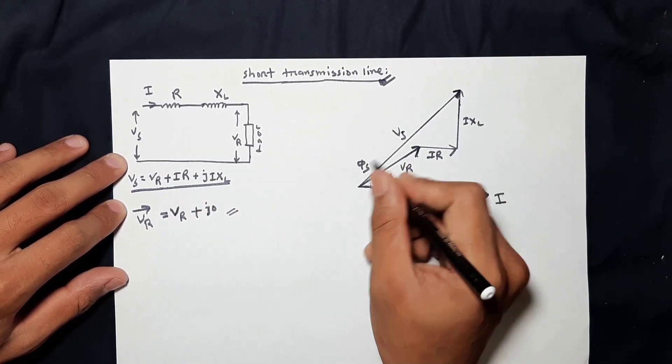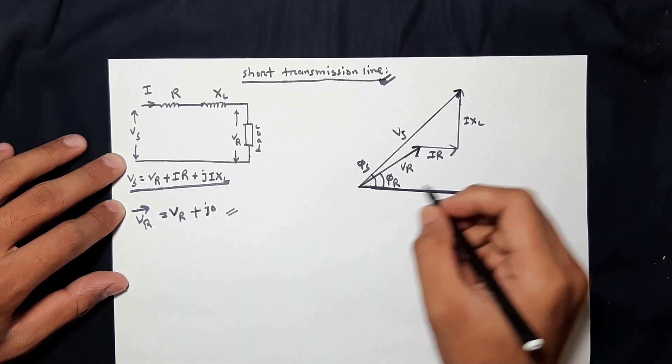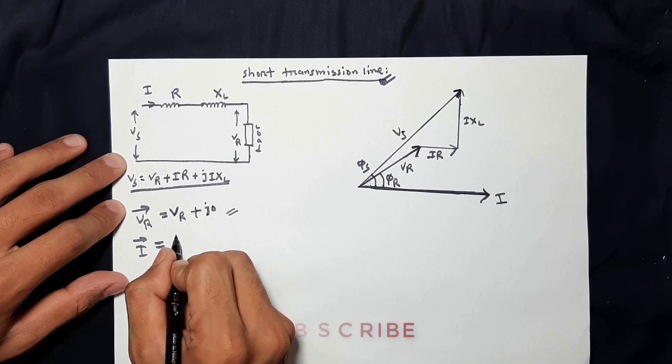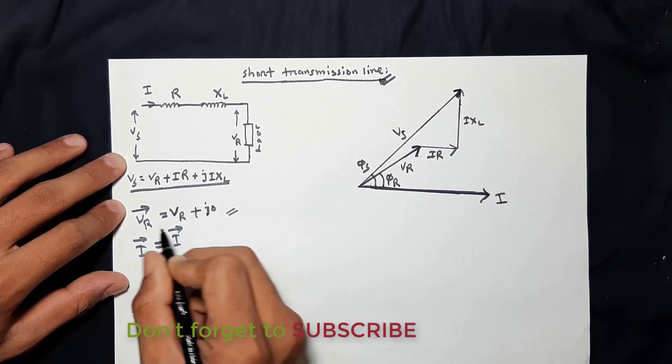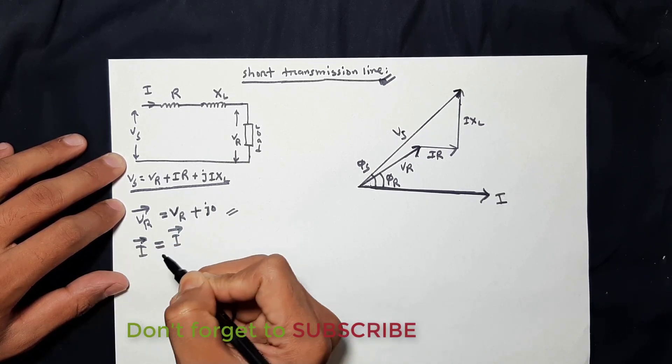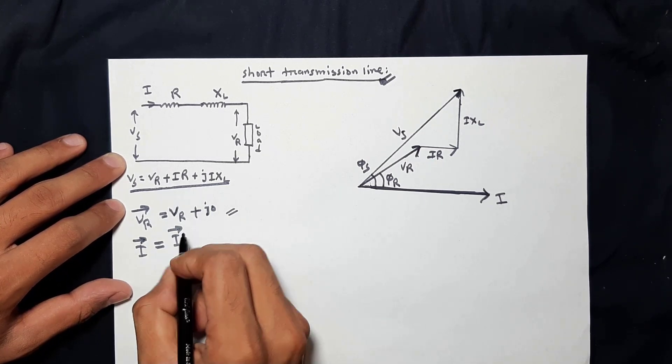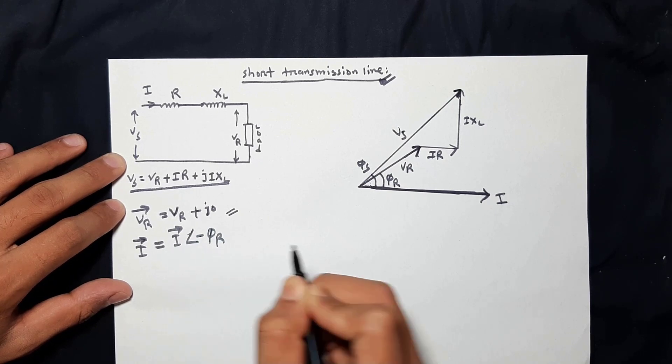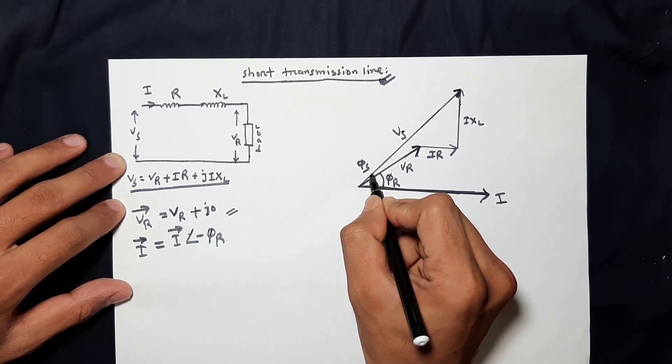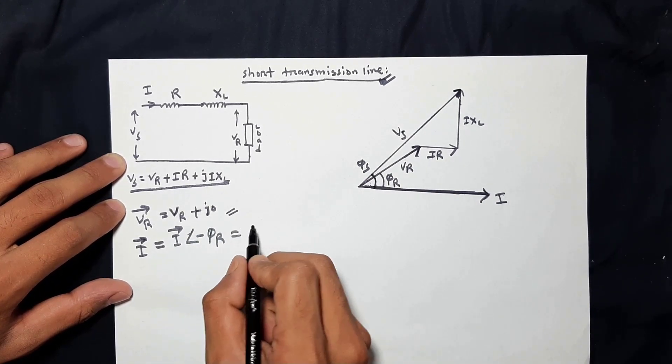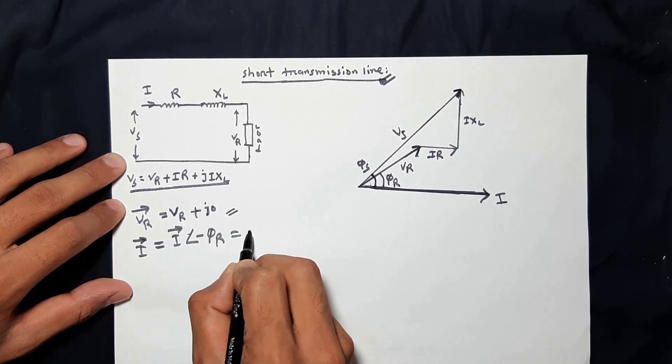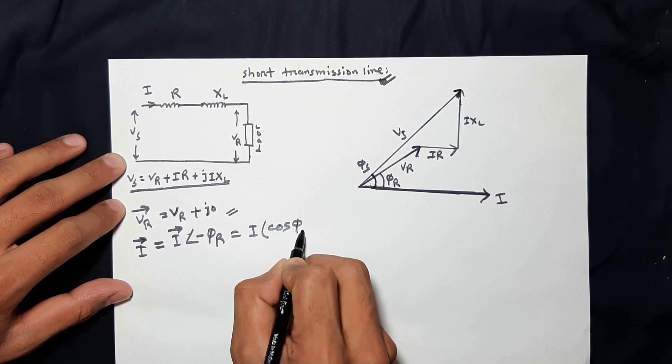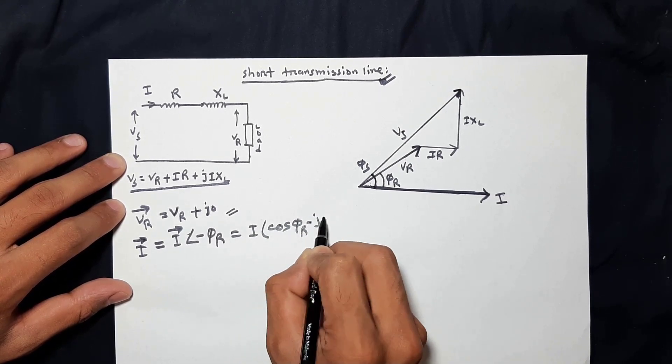We will write the current term. Then, we will write the current vector. How we write the Vr. This is very simple I angle minus the value of phi r. This is a vector and simple I expressed by phi r. Your vector model will work in the complex form. Simply, it will be I cos phi r minus j sin phi r.